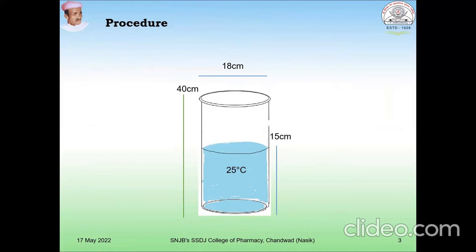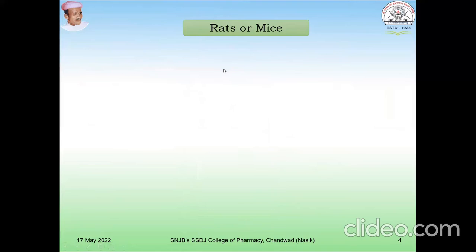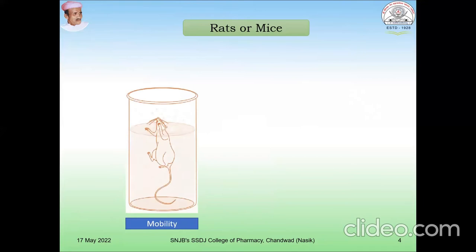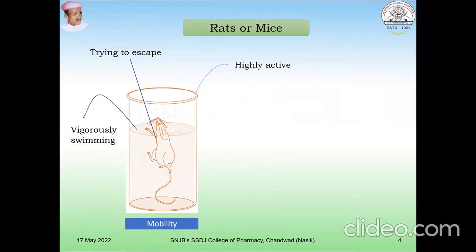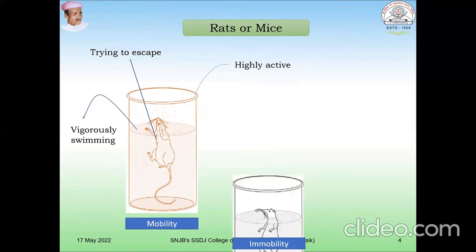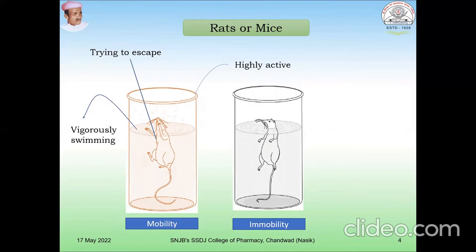Rats or mice are used for this test. When the rats are put into the cylinder, immediately they show mobility including the highly active posture. Then the rat or mice try to escape from the surrounding space and they show vigorous swimming. This is the stage of mobility. One has to observe this stage for 5 to 6 minutes. Initially for 2 to 3 minutes, the animal shows high mobility, but after some time the mobility reaches a plateau where the animal remains immobilized for approximately 80% of the time.